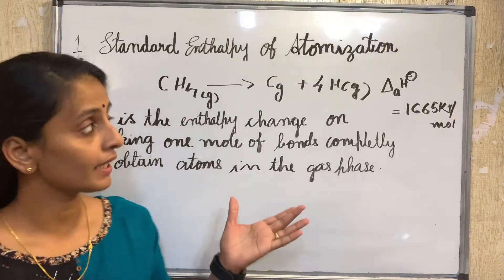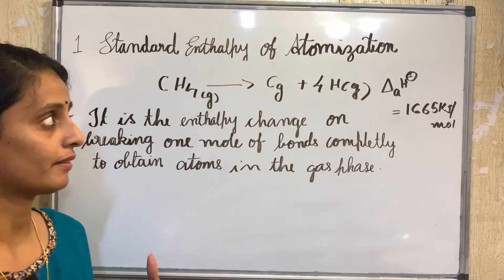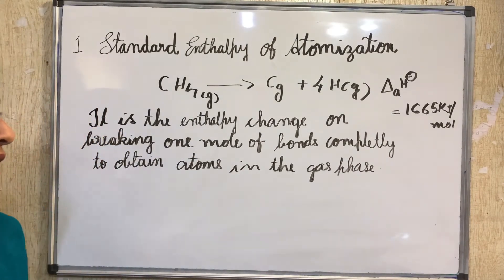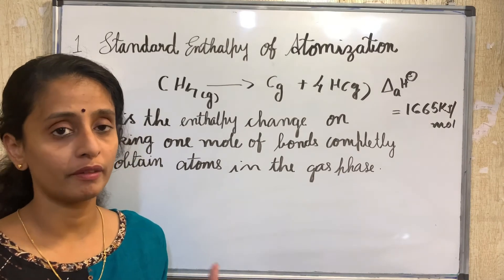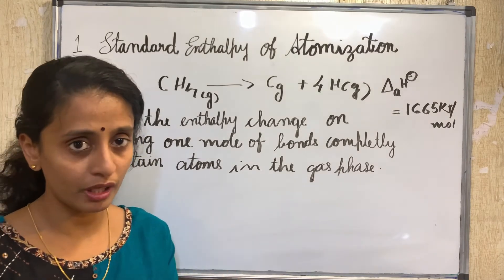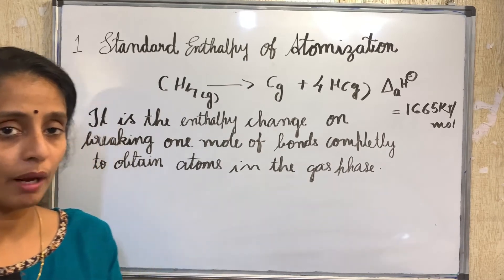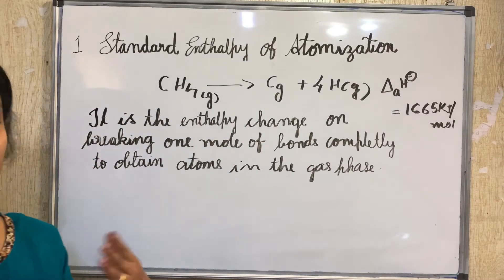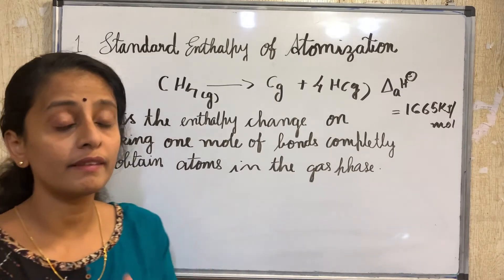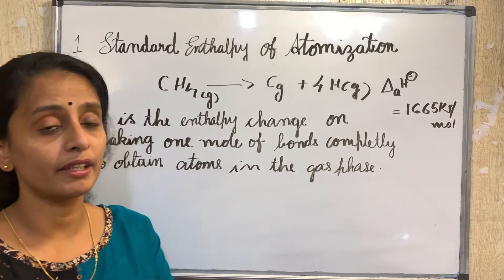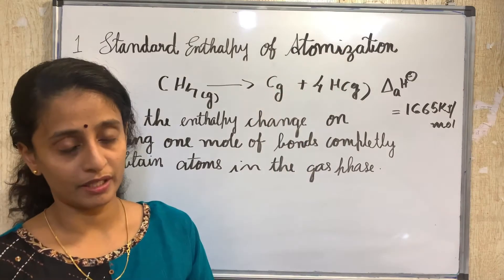Next is standard enthalpy of atomization. What is atomization? A molecule is formed when two atoms combine by bonding. When we break the bond between those atoms, we get atoms — that is called atomization. For example, in a hydrogen molecule, H₂, there are two hydrogen atoms; when we break the bond between them, that process is atomization.